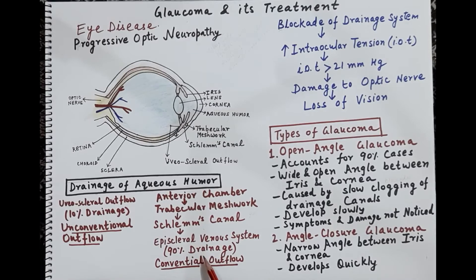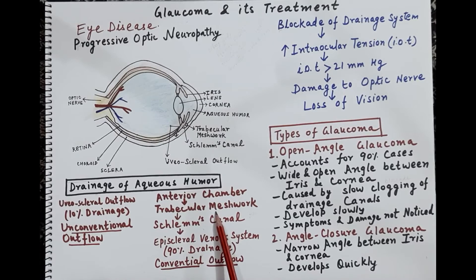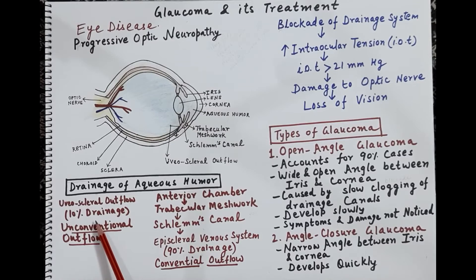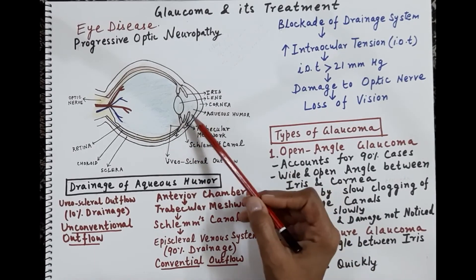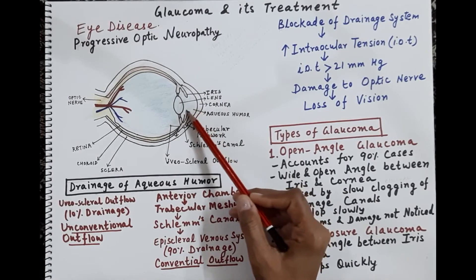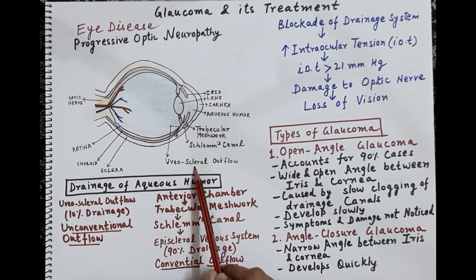Over time, the trabecular meshwork drainage system gets blocked, and because of this blockage aqueous humor is not drained, causing increased intraocular pressure and progressive neuropathy. The second drainage system is the unconventional uveoscleral outflow, accounting for only 10% of drainage. As shown by this arrow, aqueous humor drains from the anterior part of the eye directly into the sclera and out of the eye.